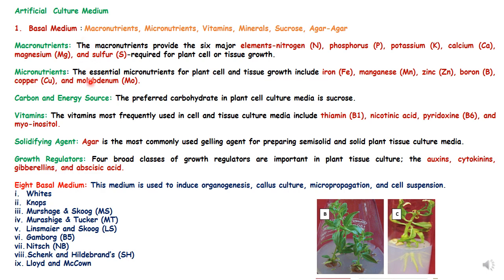When the basal medium is supplemented with growth regulators, four kinds of growth regulators can be used: auxins, cytokinins, gibberellins, and abscisic acid. There are eight basal media commonly used in tissue culture, which can induce organogenesis, callus culture, micropropagation, and cell suspension. These eight media are: White's medium, Nobb's medium, Murashige and Skoog (MS medium), Murashige and Tucker (MT medium), Linsmaier and Skoog (LS medium), Gamborg's or B5 medium, Nitsch medium (NB medium), and SH medium (Schenk and Hildebrandt's medium), and Lloyd and McCown's medium.